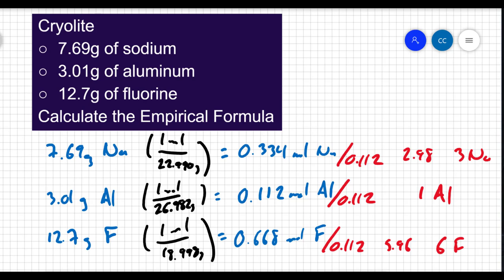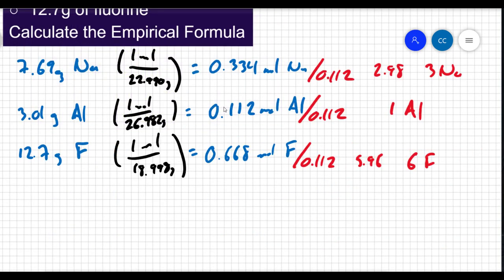But I'm going to caution just a little bit of rounding. If you find yourself rounding a great deal, then there's going to be something else we have to do. Well, with what I'm given here, it looks like I have 3 sodiums, 1 aluminum, and 6 fluorines. And that, in fact, is the empirical formula for cryolite.